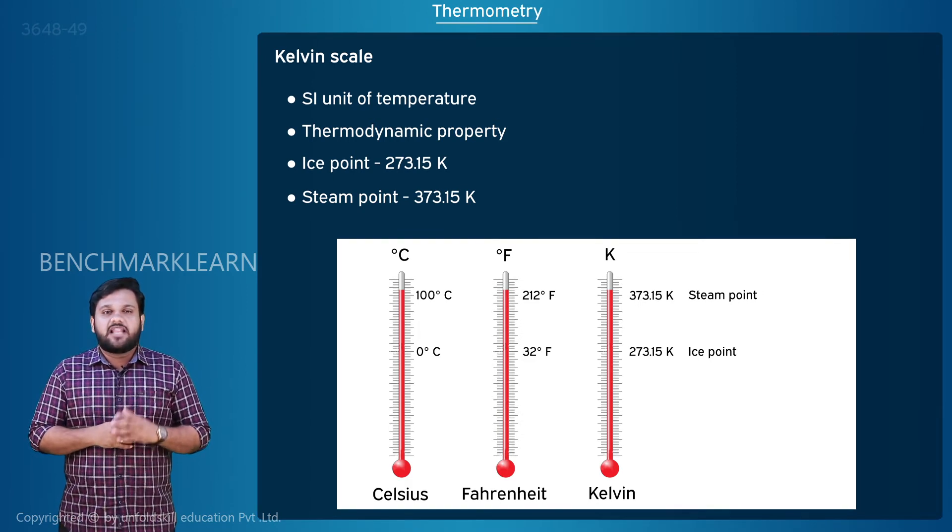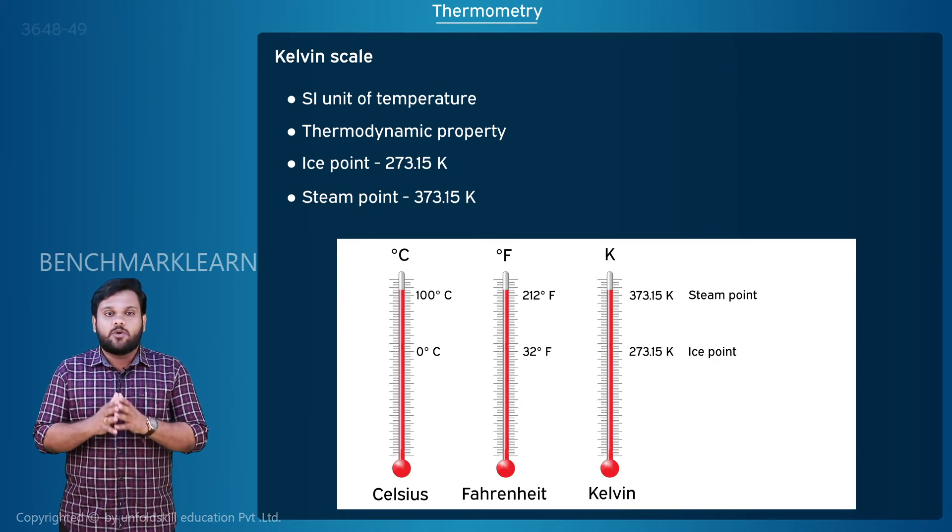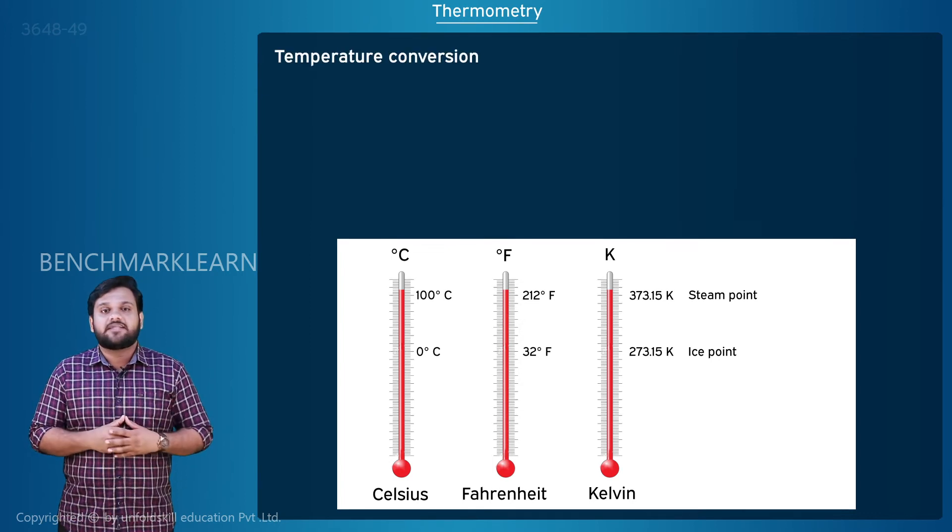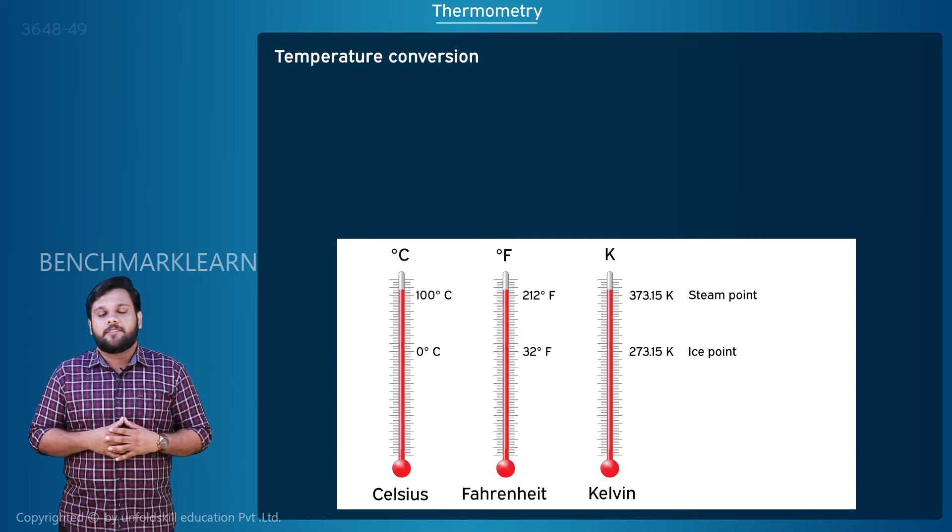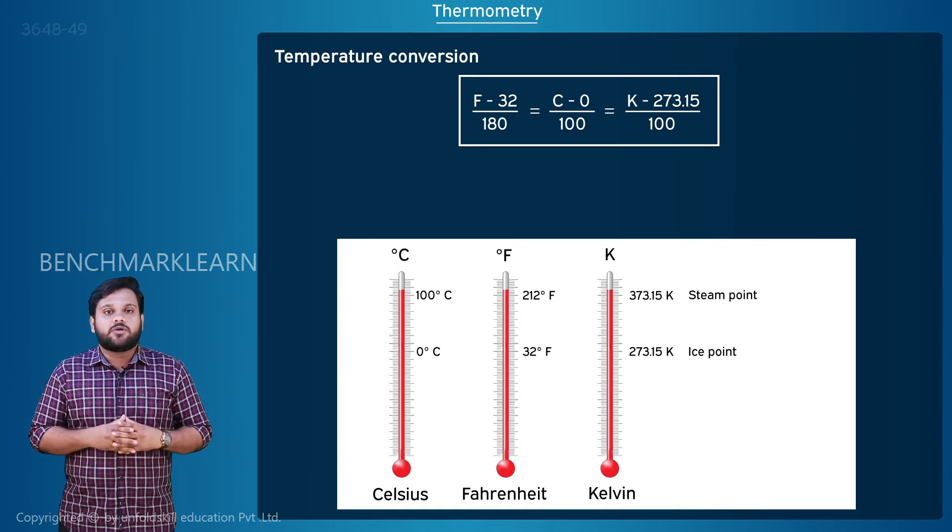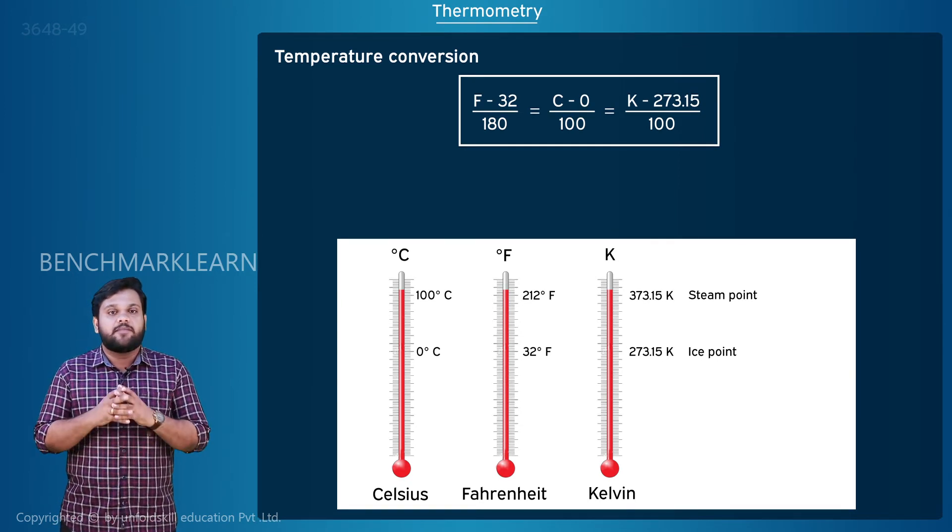The temperature difference between ice point and steam point is divided into 100 equal divisions. We can easily convert between these three temperature units by a relation: F minus 32 divided by 180 is equal to C minus 0 divided by 100, which is equal to K minus 273.15 divided by 100.